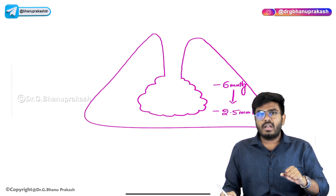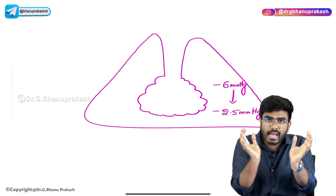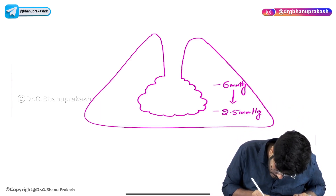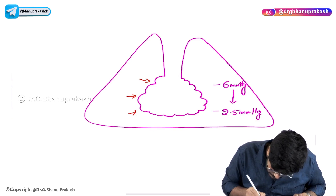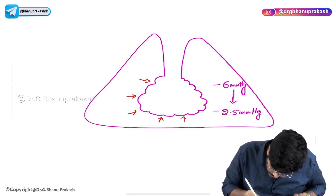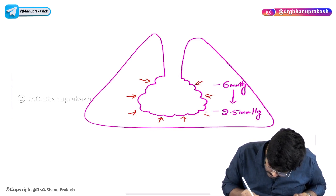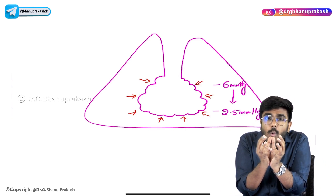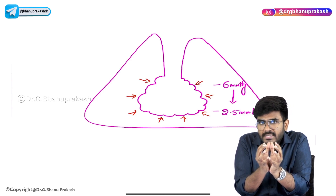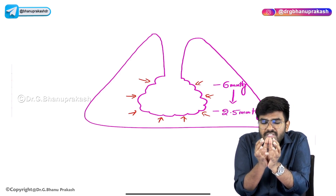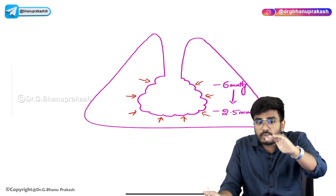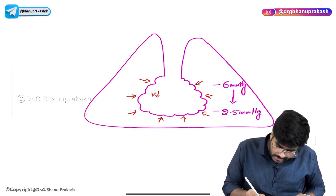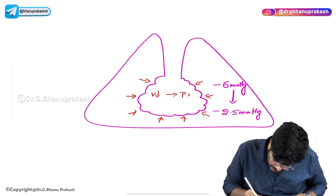There is less vacuum now. Whenever there is less vacuum, the alveoli are collapsing back due to elastic recoil forces. The alveoli are returning to their normal shape. As the alveoli collapse, the volume of the alveoli decreases, and when volume decreases, pressure inside increases.